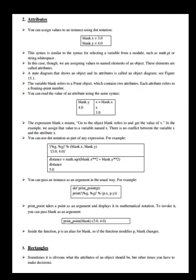You can use dot notation as part of any expression. You can also pass an instance as an argument in the usual way. For example, print_point takes a point as an argument and displays it in mathematical notation. To invoke it, you can pass blank as an argument. Inside the function, p is an alias for blank. So if the function modifies p, blank changes.